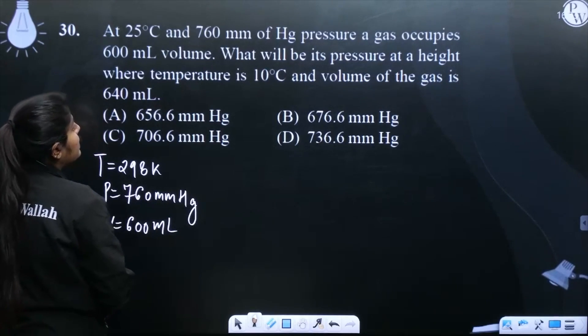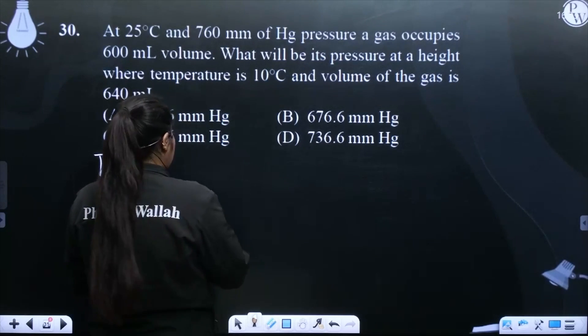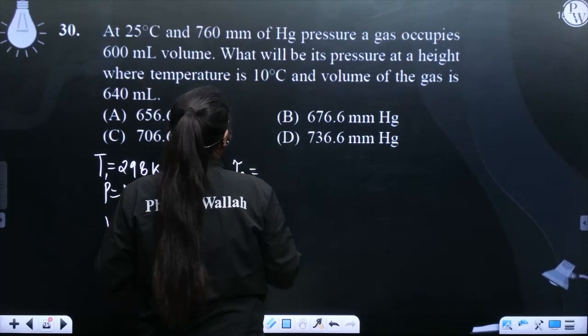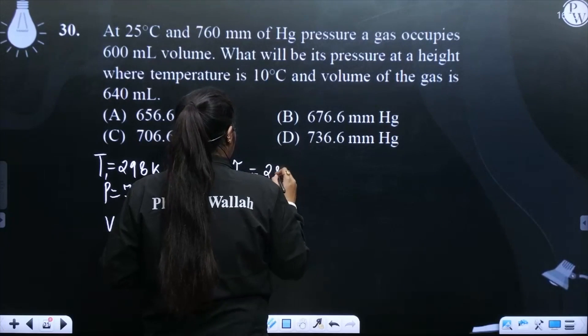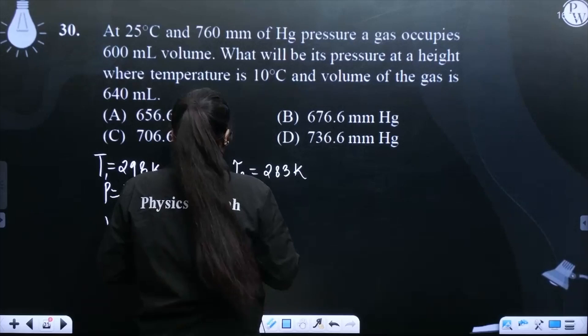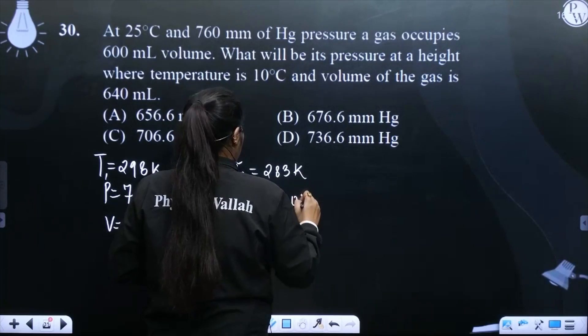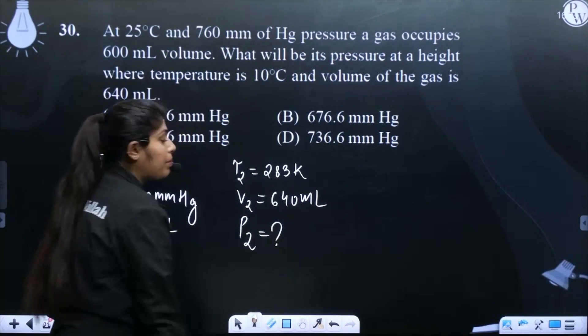What will be its pressure at a height where the temperature is 10 degree Celsius? That means, earlier it was 298. Now what is the pressure? 10 degree Celsius, that means how many Kelvin? 283 Kelvin. Volume of the gas has become 640 ml. We have to find what the pressure is. We have to calculate P2.